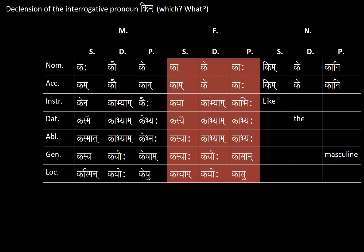Namaste and hello, this is your Sanskrit instructor welcoming you back into lesson number 228. In this lesson we will learn about the declension of the interrogative pronoun, which is Kim (किम्) in Sanskrit. Kim is a Sanskrit word for 'which' or 'what'.